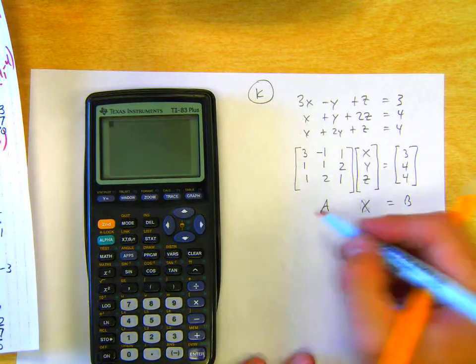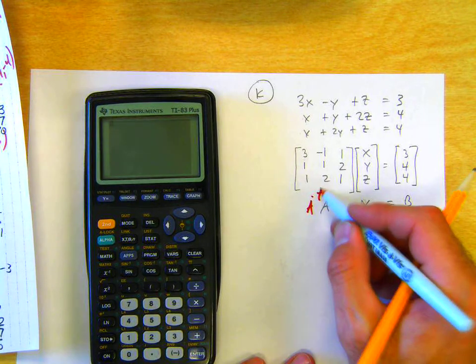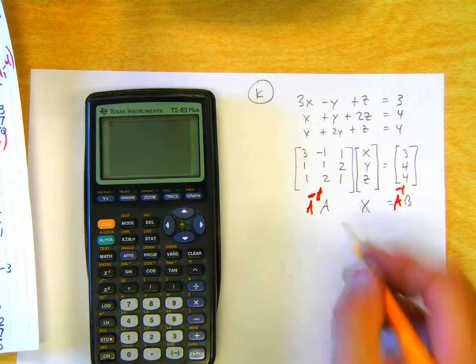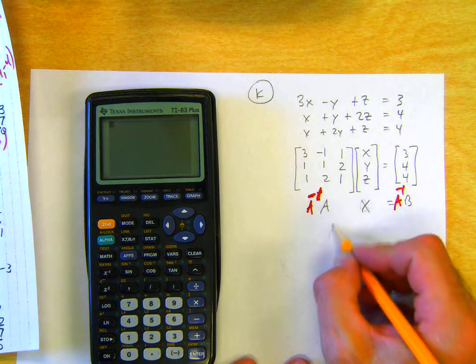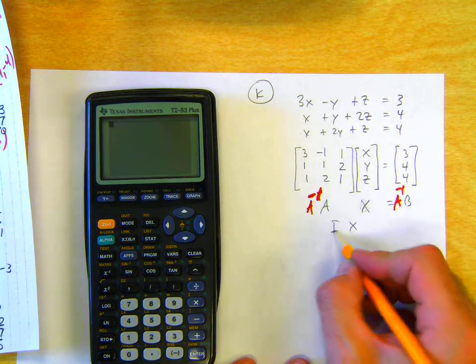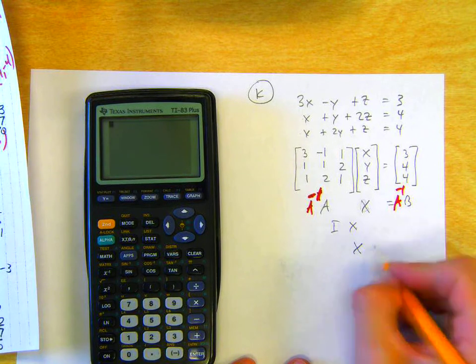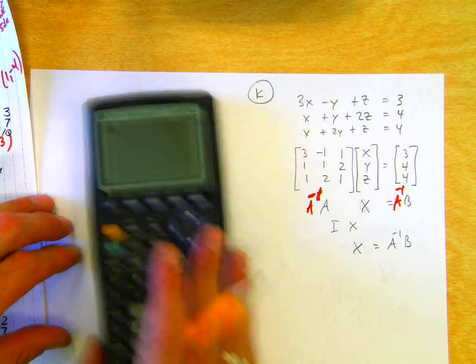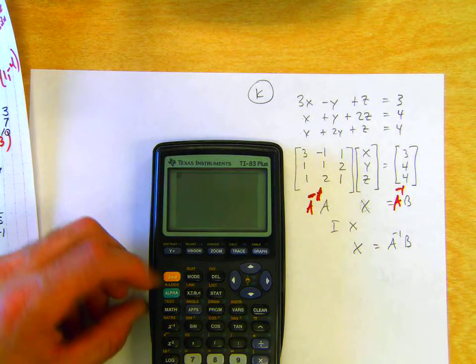To solve this problem, we're going to multiply both sides by the inverse of A. And we know that A inverse times A is the identity matrix, and the identity matrix times a matrix is the matrix. So all we really need to do is A inverse B, as long as the inverse exists.